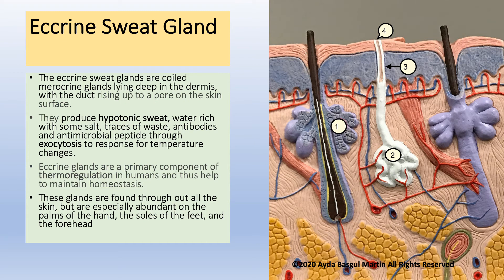Eccrine sweat glands are coiled merocrine glands. They lie deep in the dermis with the duct rising up to a pore on the skin surface. In this picture, the eccrine sweat gland is labeled with number 2, the sweat gland duct with number 3, and the opening — called the pore of the sweat gland — is number 4. They produce hypotonic sweat, water-rich with some salt, traces of waste, antibodies, and antimicrobial peptides, released through exocytosis in response to temperature changes. Eccrine glands are a primary component of thermoregulation in humans and help maintain homeostasis. These glands are found throughout all the skin but are especially abundant on the palms of the hands, soles of the feet, and the forehead.